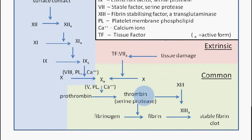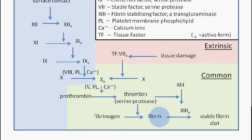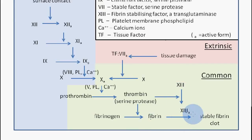Thrombin enables the conversion of factor 13 into factor 13a, and also enables the conversion of fibrinogen into fibrin. Once we have fibrin, the factor 13a made through thrombin converting factor 13 into 13a is used by fibrin to form a stable fibrin clot. That's what we have as the end product.